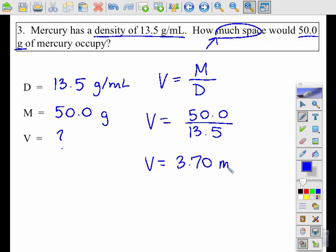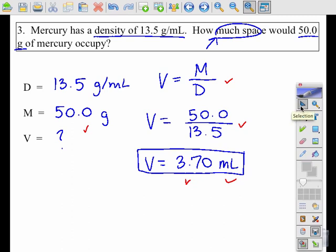So it's going to be 3.70 if I'm rounding correct. And the unit for volume is going to be milliliters. So my answer is 3.70 milliliters. Again, notice I have my nodes, my formula, my work plugged in, my answer with my unit. I will get full credit for this question.